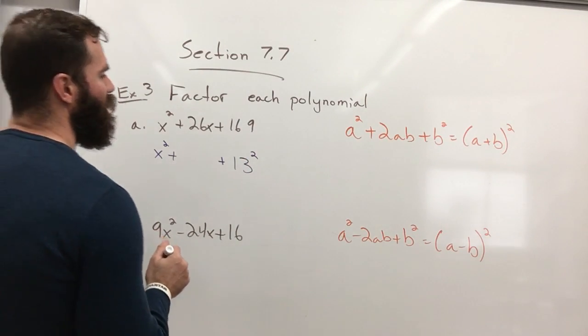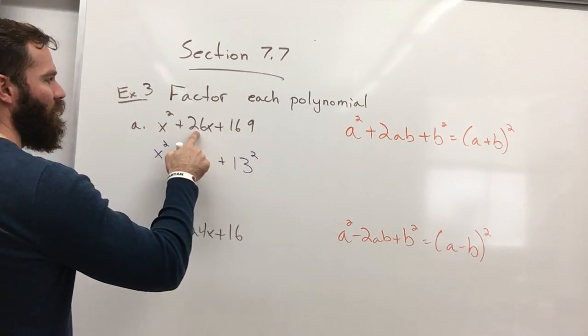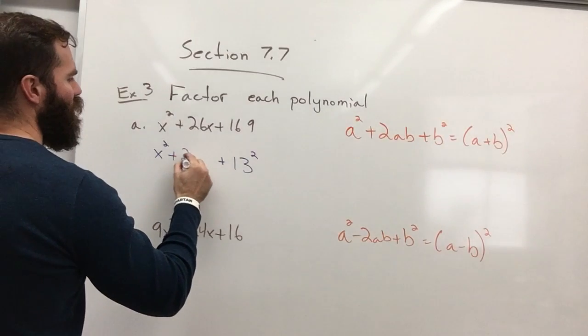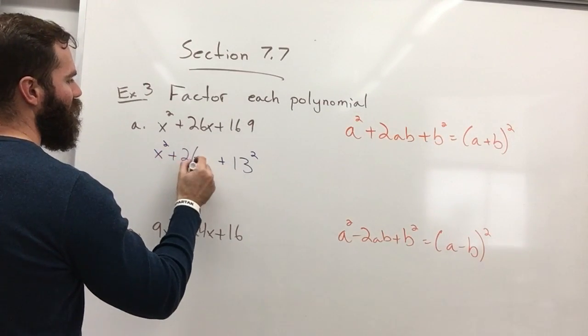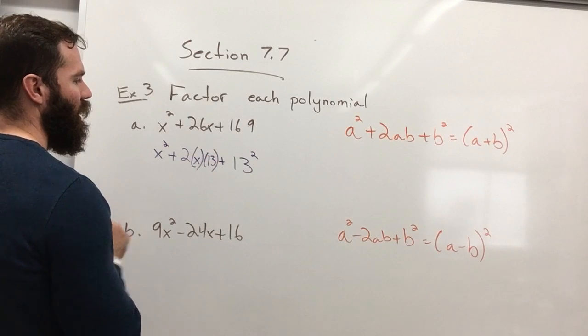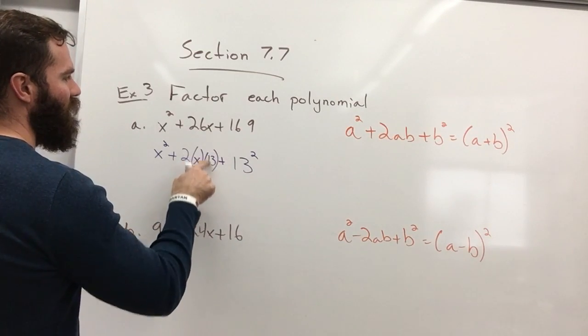To double check to make sure that that is correct, this middle number, 26x, is 2ab. So 2 times a, which is x, times b, which is 13. 2 times 13 is 26.